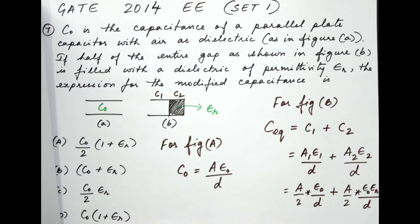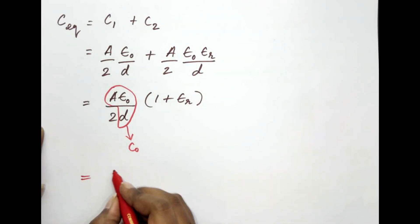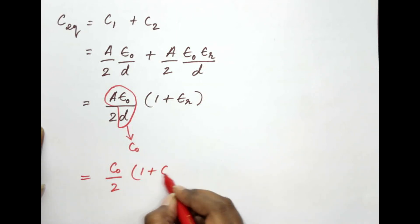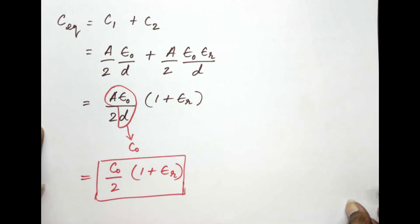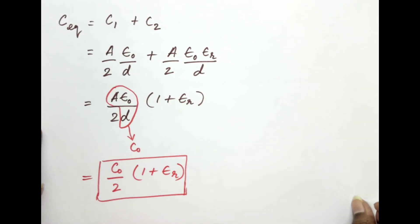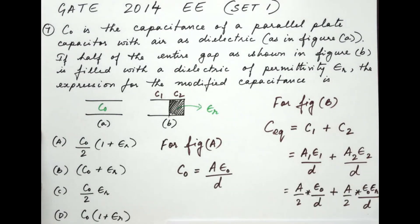So we are substituting that part here. So we can note this down as C0 divided by 2 into 1 plus epsilon r. So this is the modified capacitance of the capacitor given to us in the question. Let's check and see which it matches. It matches option A. So this is the final answer.